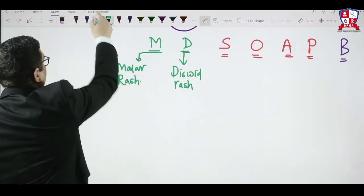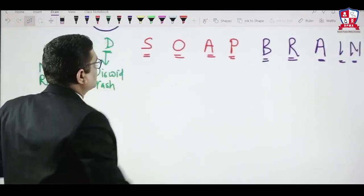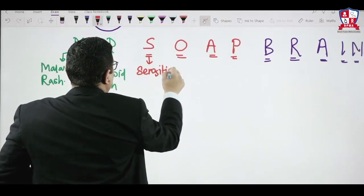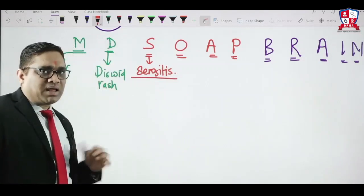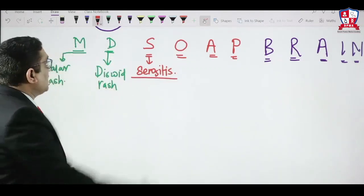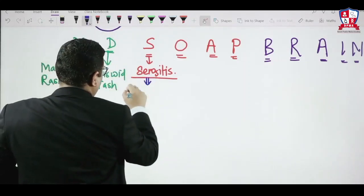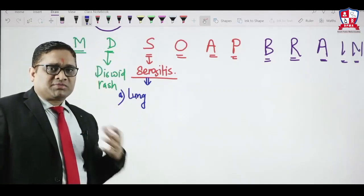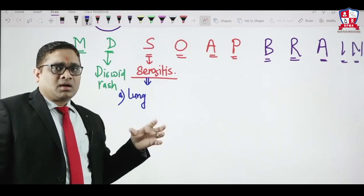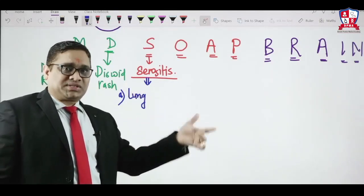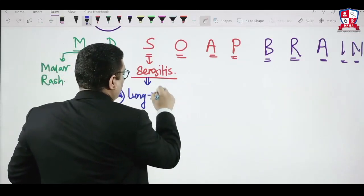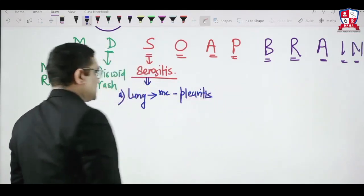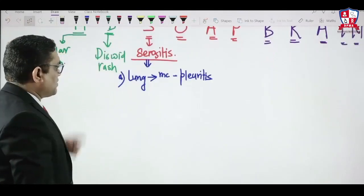S stands for serositis — serosal aspects have inflammation. For example, in the respiratory tract, the most common presentation of SLE lung is pleuritis — this was an All India exam question. The most common SLE lung presentation is pleuritis.